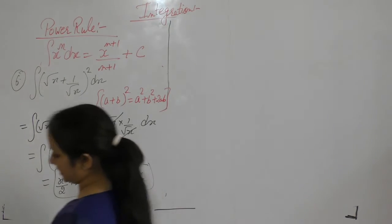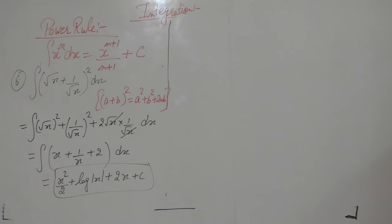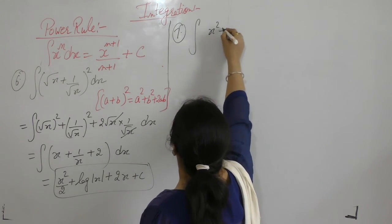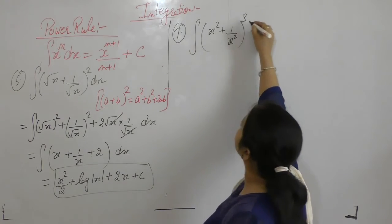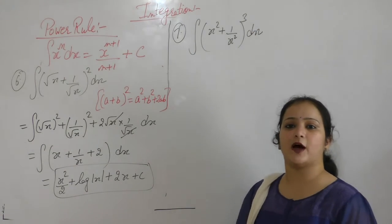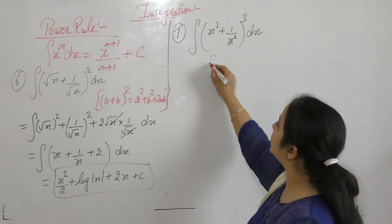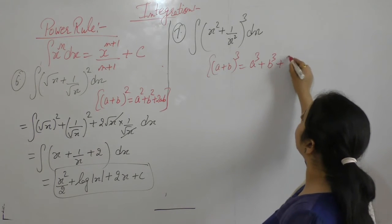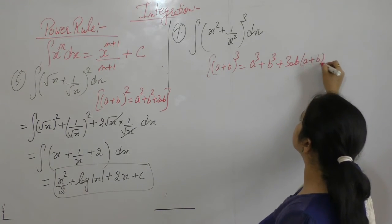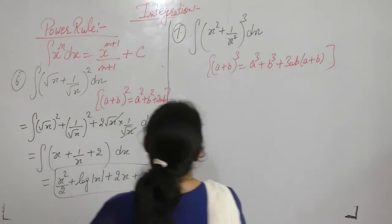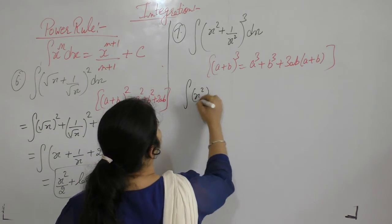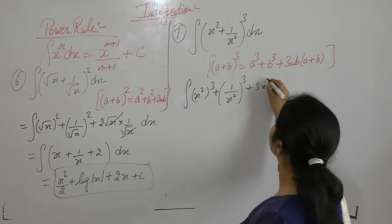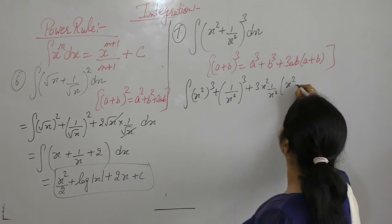Example 7: Integral of (x² + 1/x²)³ dx. Using the identity (a+b)³ = a³ + b³ + 3ab(a+b), we expand the expression. Apply the formula with a = x² and b = 1/x².